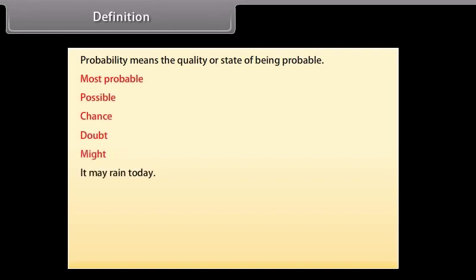For example, it may rain today. The word 'may' in the sentence shows probability. I doubt that he will come. Such words involve uncertainty.